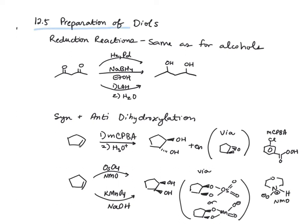In the next section, we focus on the preparation of diols. The reaction of diketones or dialdehydes is going to lead to the formation of diols, because we're treating two carbonyls with a hydride source. That gives us a double reduction where we're adding hydrogen across both pi bonds — so this is just the same thing as what we've done before, but twice.